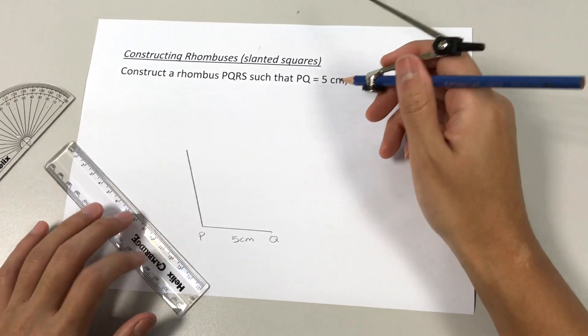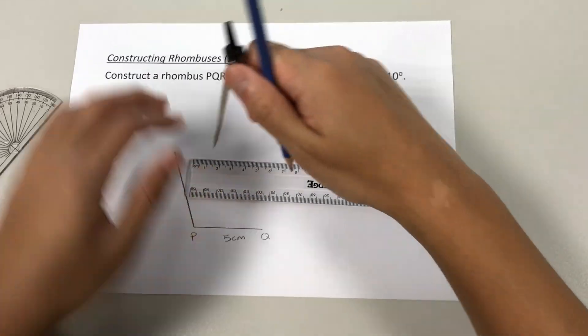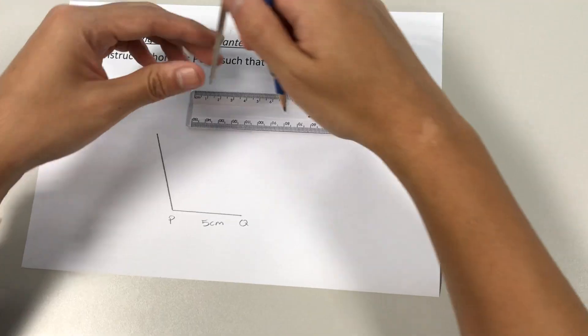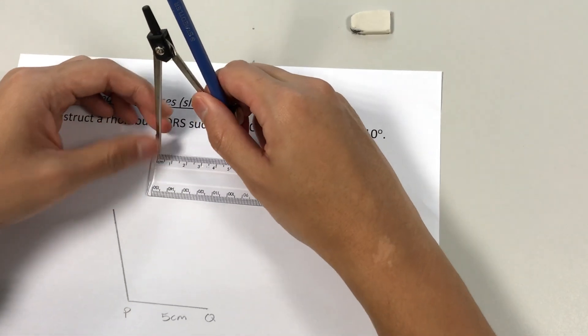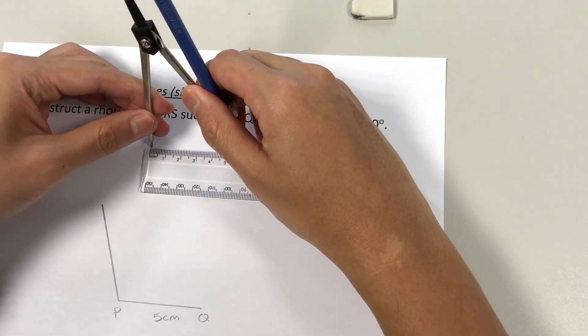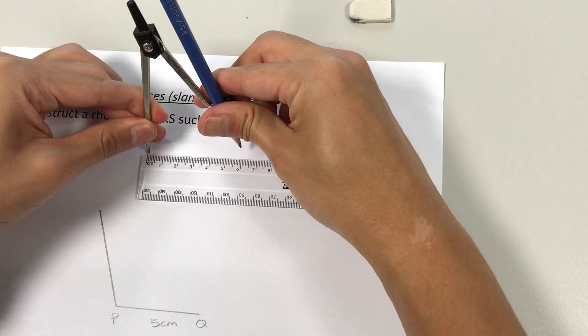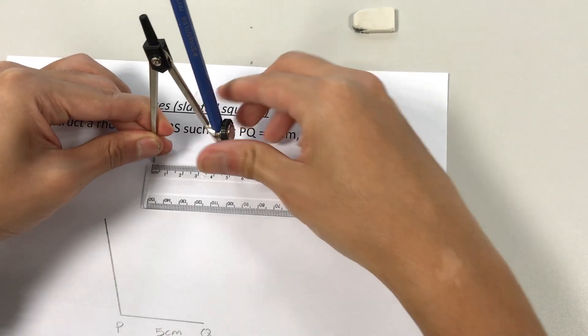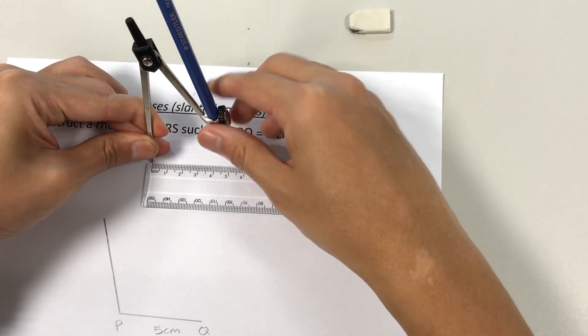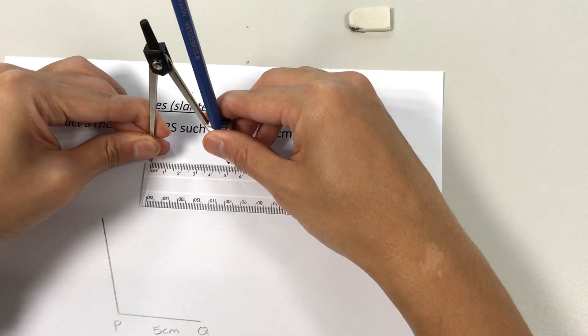Next, we'll open our compass to 5cm. So let's use this part here, 0 to 5. Okay, double check. 0 to 5.